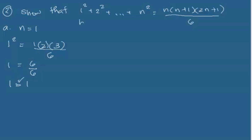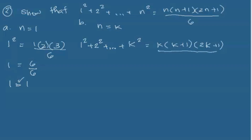The next step is to assume that when n is equal to k, this statement is true, so it will be: one squared plus two squared plus ... plus k squared is equal to k times k plus one times two k plus one all over six. Then we'll assume that the next term after k — which is k plus one — will also be true for this statement.